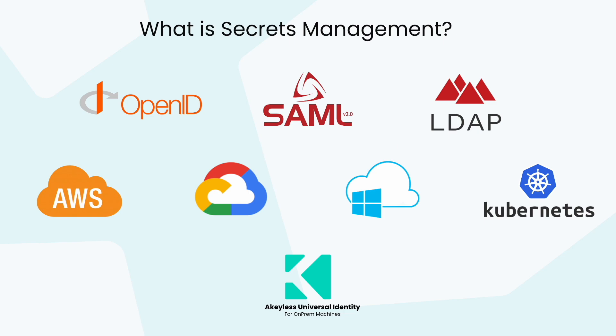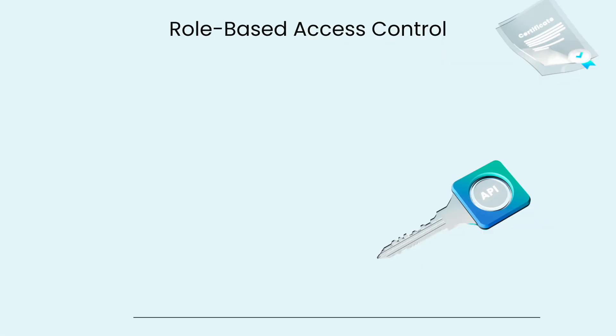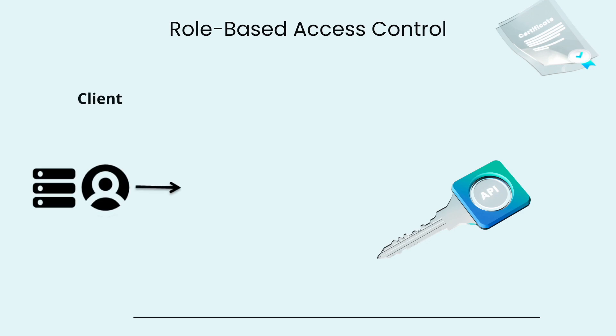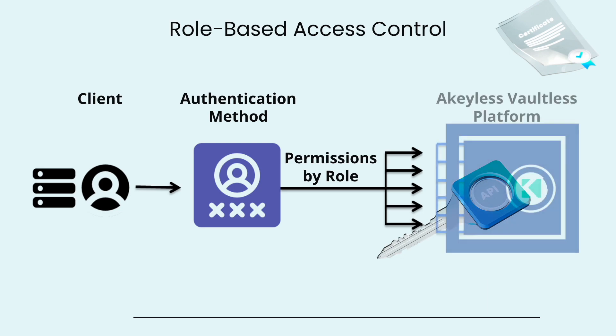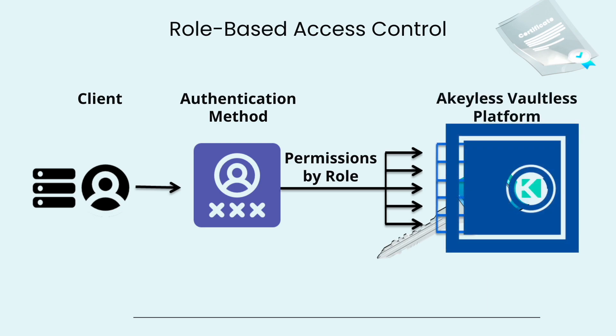Once a user or machine is authenticated to Akeyless, they are given permissions to consume secrets based on an access role. Akeyless' role-based access control ensures that each secret is made available for use only to the client that has proper permissions. In addition, Akeyless enables attribute-based access control through the use of subclaims. It's always best practice that a user is given the least amount of privileges possible, so they can only access the minimum number of secrets they need.